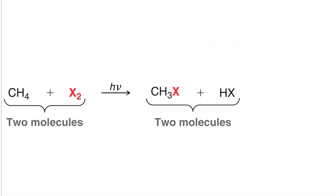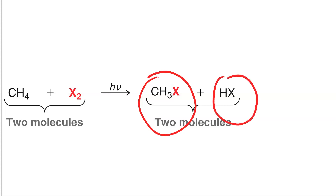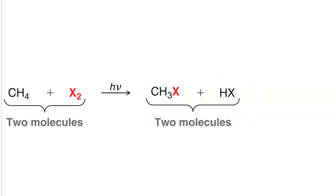In halogenation of methane, we go from a molecule of methane and a molecule of halogen — two molecules — to a molecule of methyl halide and a molecule of haloacid — two molecules. This tells us that the value of delta S is pretty close to zero.